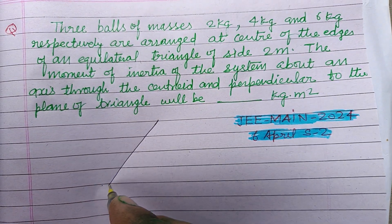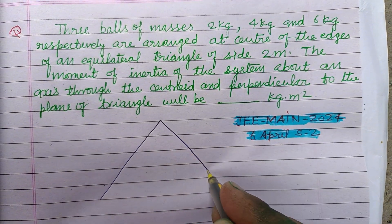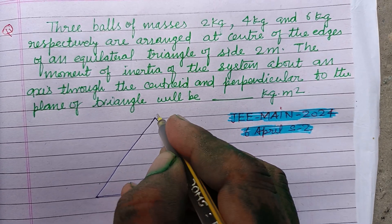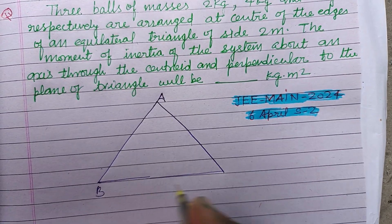So first we make an equilateral triangle. So this is an equilateral triangle A, B, C.